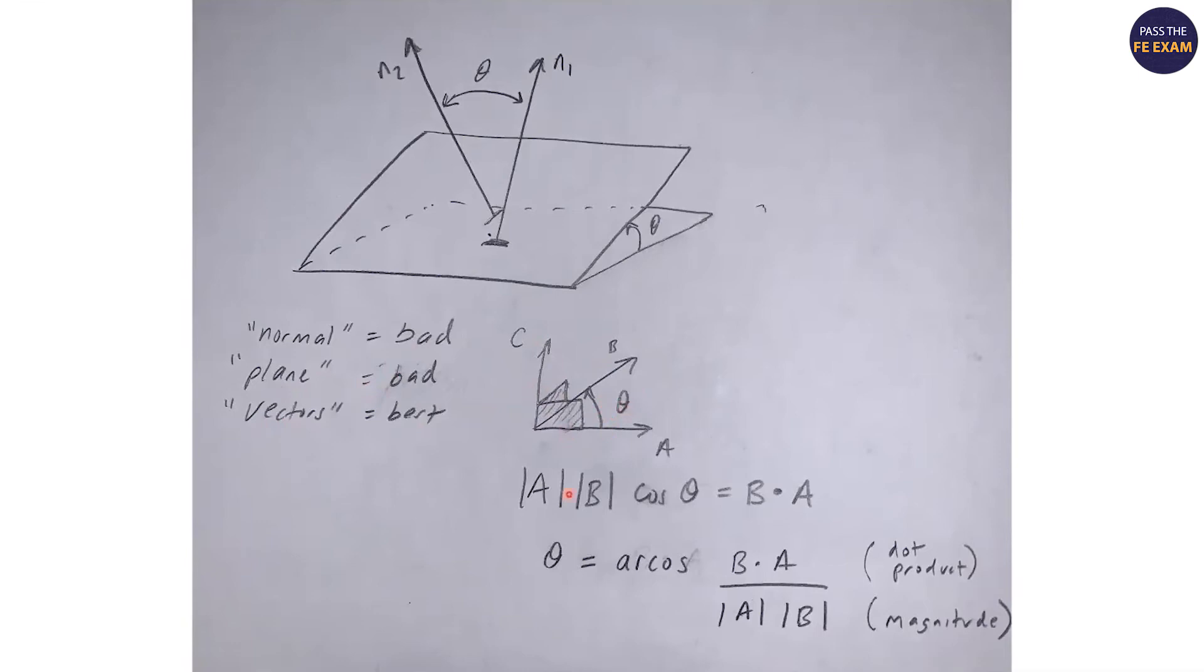And then they show right below it that that angle theta or an equation related to it is the magnitude of AB, the vectors, times the cosine of theta equals the dot product of the two vectors. So if you wanted to solve for theta, you can reconfigure this and come up with the arccosine, the dot product of the two over the magnitude of the two.